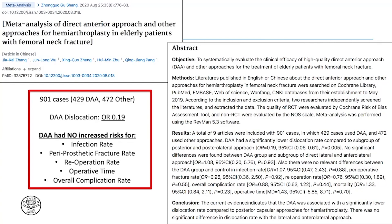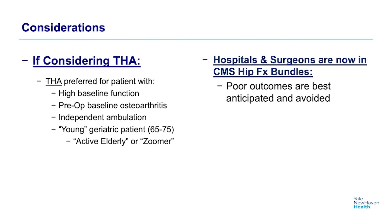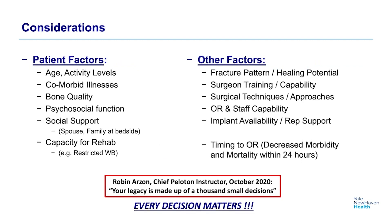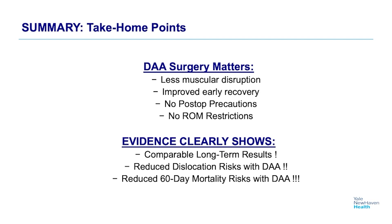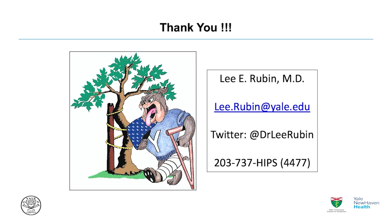A more recent analysis out of China shows 901 cases where the direct anterior dislocation odds ratio was 0.19 — one-fifth — with no increased infection rate, periprosthetic fracture rate, operation rate, operative time, or overall complication rate. So do the hip right at the index case; especially now that we're in bundles, you want good outcomes. As one instructor says, your legacy is made up of a thousand small decisions — make good decisions, use the data. The anterior surgery matters: less muscle disruption, improved recovery, no restrictions, improved dislocation and mortality risks. It's a great population to start an anterior hip practice with hemis, because these patients are supple, flexible, and willing to let you take care of them at a high level. Thank you very much, and I look forward to discussion.